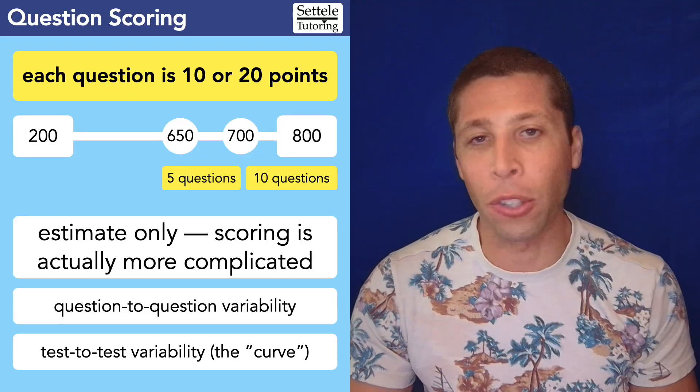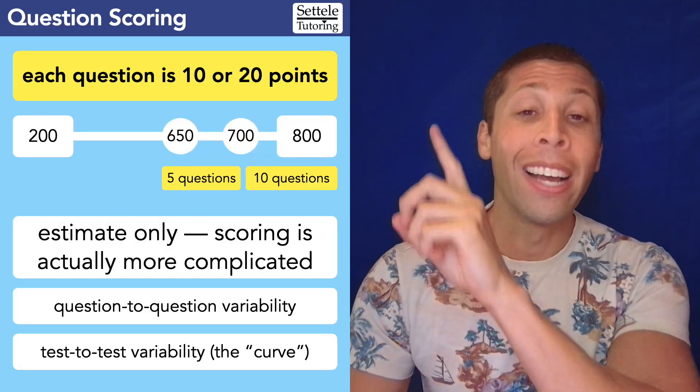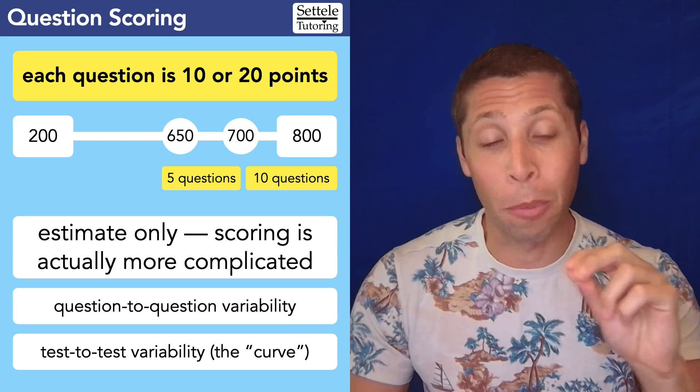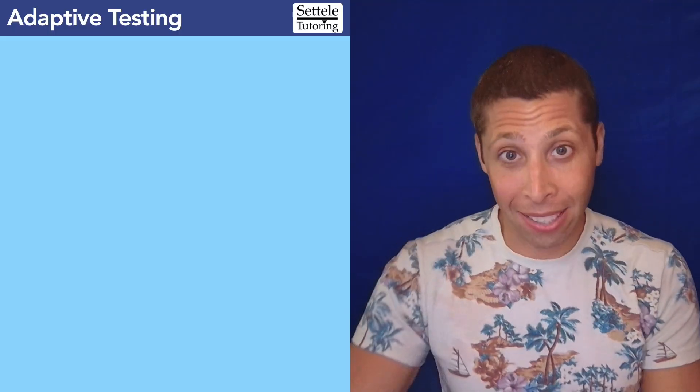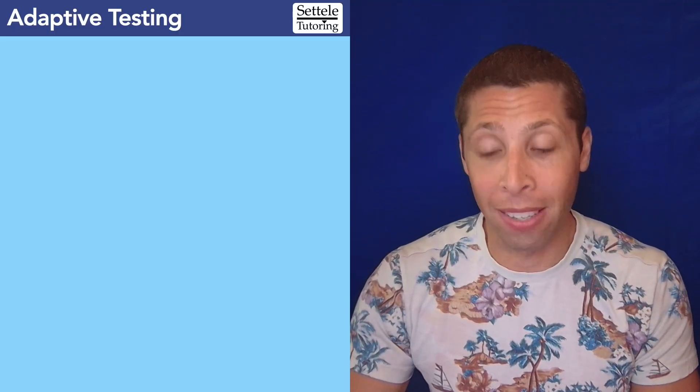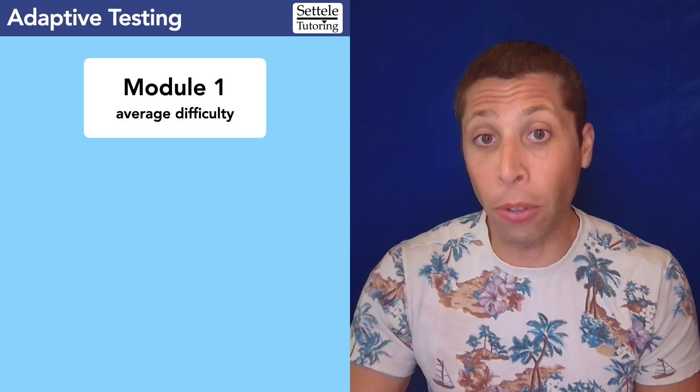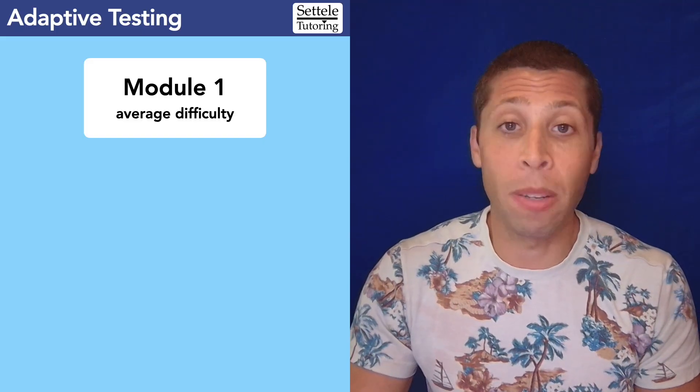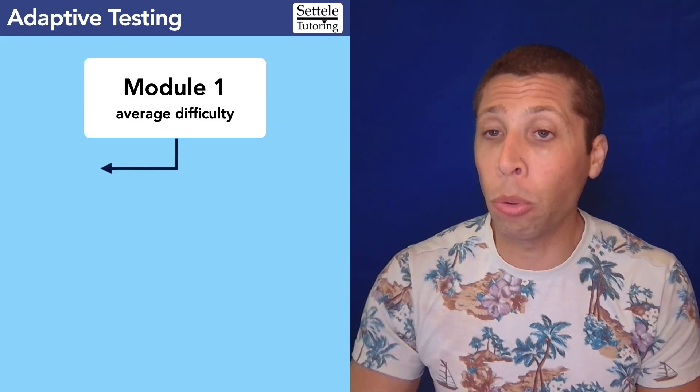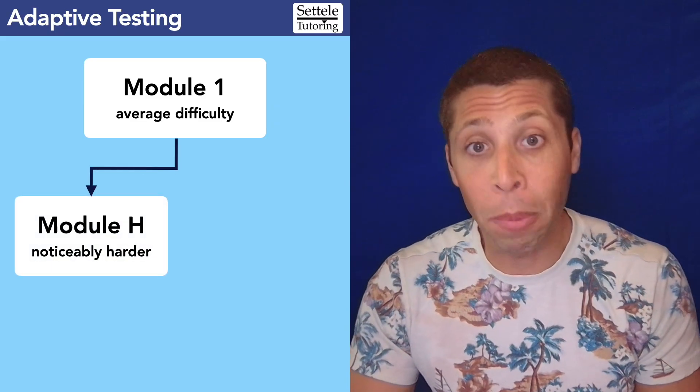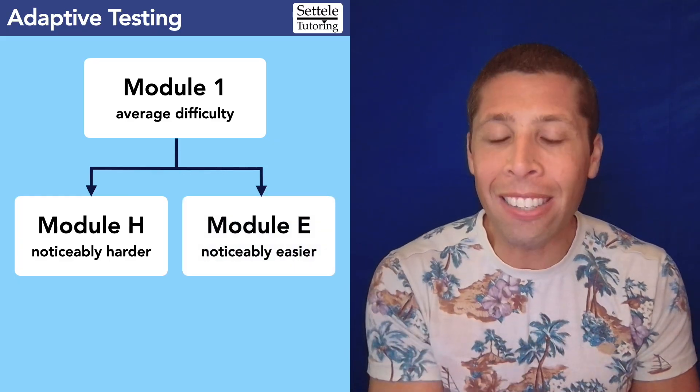Again, I'll talk more about this in the other video if you're curious, but it doesn't matter for any practical purposes. If you are trying to understand your scoring, stick to this estimate. It's about 10 or 20 points per question with one big exception. So let's talk about adaptive testing. This is also part of the digital SAT experience. The quick version is we have two modules per subject. The first module for each one is going to be an average difficulty of questions—a mixture of easy, medium, and hard. If you do well in that module, you get placed in a second module that is noticeably harder. If you do not do so well in the first module, you will get placed in an easier second module.